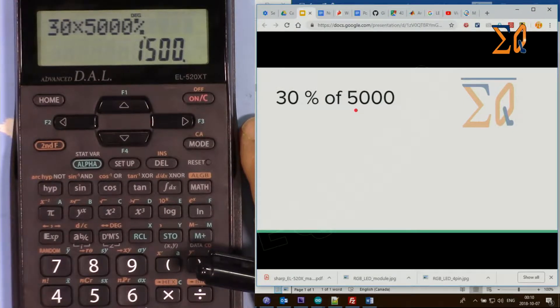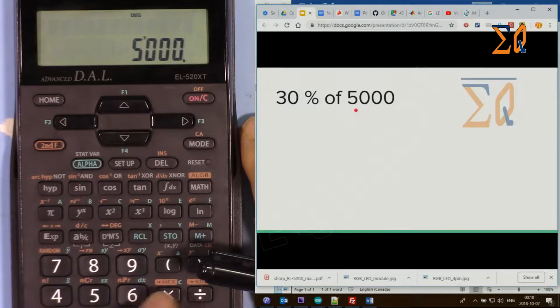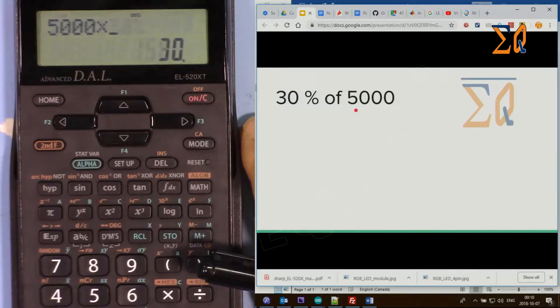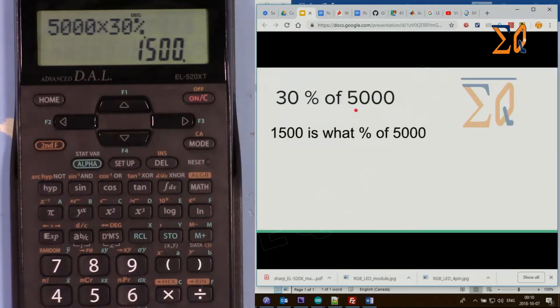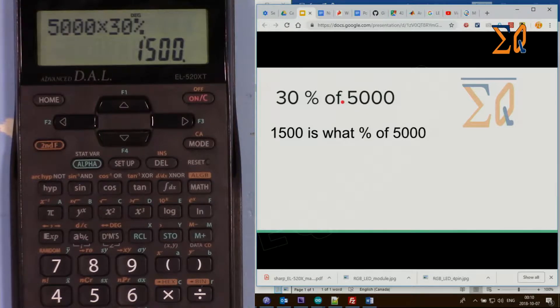Or you can do it the other way. Enter the 5,000 first, times 30, and then second function percent. The answer is the same. Now the question will be the other way. Let's say 1,500 is what percent of 5,000. We know it's 30%.